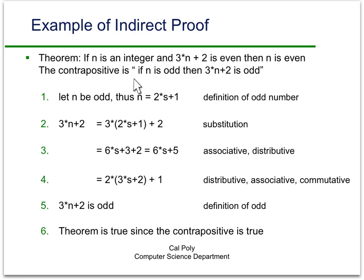So we've shown the contrapositive is true, that if n is odd, then 3n plus 2 is odd. And so we can conclude that if 3n plus 2 is even, then n is even by using the contrapositive.